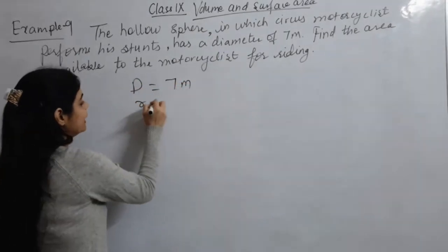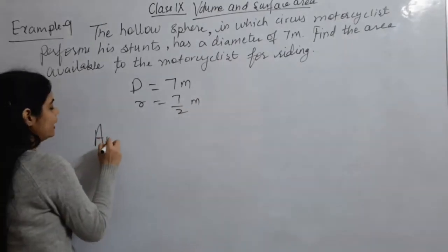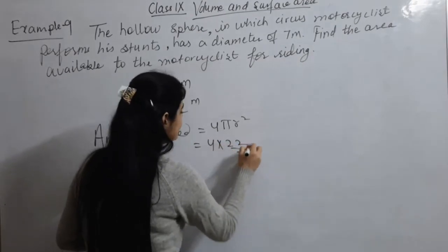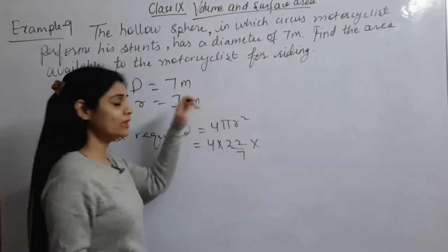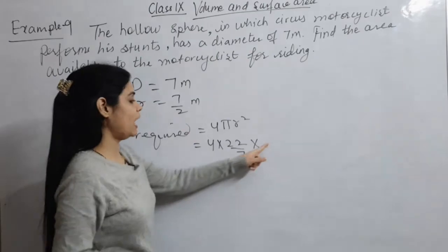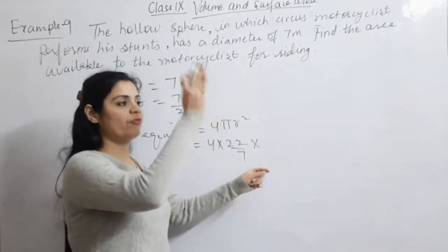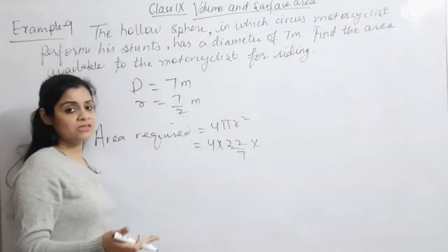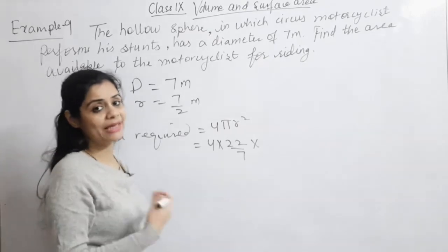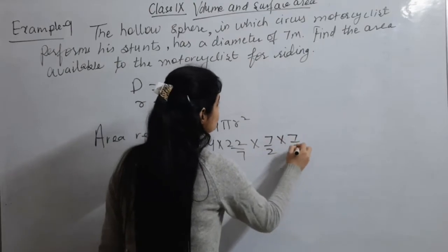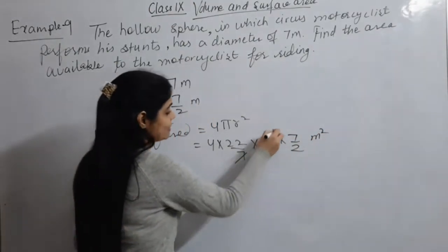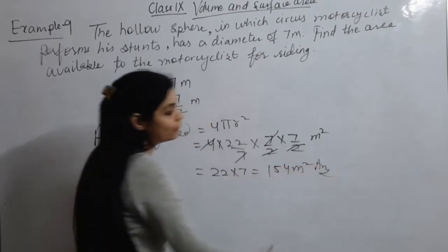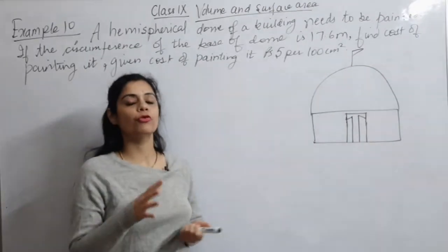Diameter is 7 m, so radius = 7/2 m. Surface area = 4 π r² = 4 × (22/7) × (7/2) × (7/2) m². The 7 in the denominator cancels with the 7 numerator, and the 4 cancels with one 2×2 = 4, giving 22 × 7 = 154 m² as the answer.